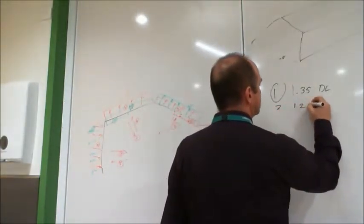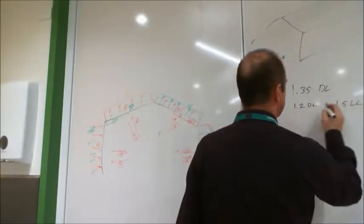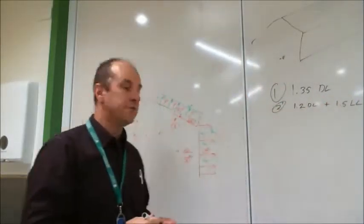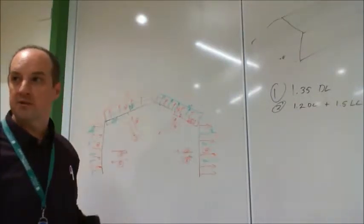Combination two is 1.2 times the dead load plus 1.5 times the live load. The live load in this case is people walking around on the roof, other minor things on the roof like that.